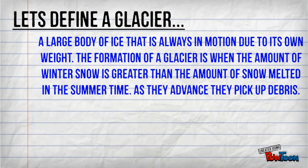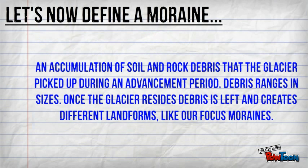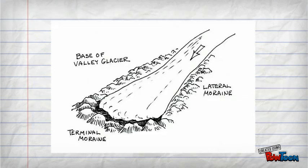As glaciers advance, they pick up debris. A moraine is an accumulation of soil and rock debris that the glacier picked up during an advancement period. Debris can range from silt size to large boulders, which are also known as erratics. Once the glacier recedes, debris is left and creates a list of different landforms, but we're only going to focus on moraines.